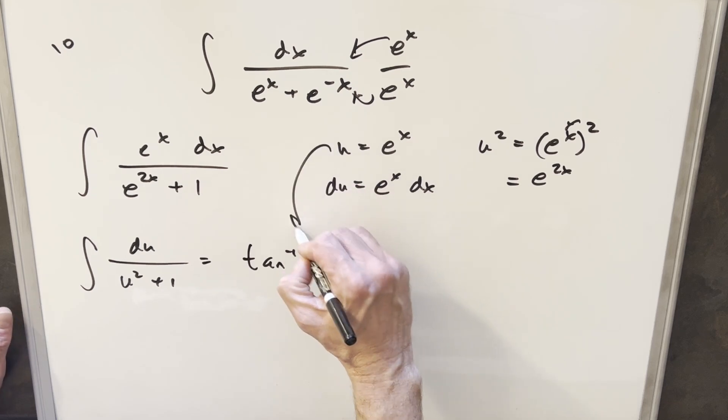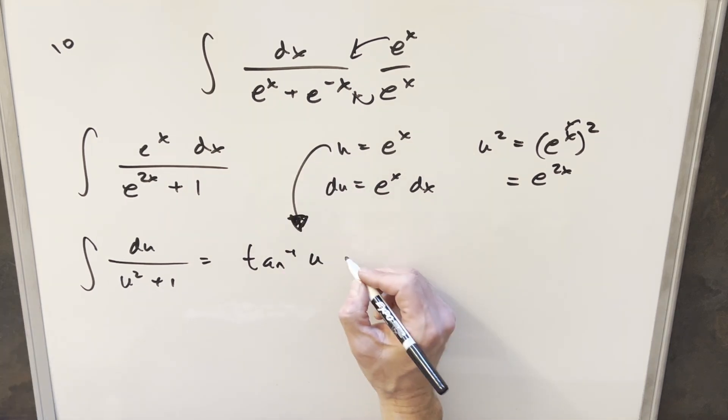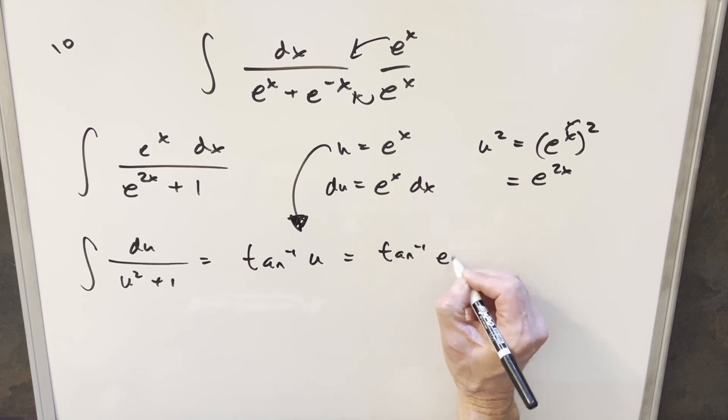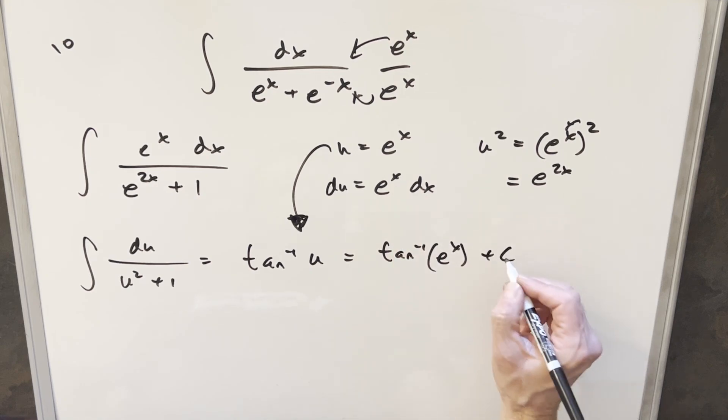All I need to do to finish this off is back substitute. And so our solution is just going to be arctan e to the x plus c. And that's it.